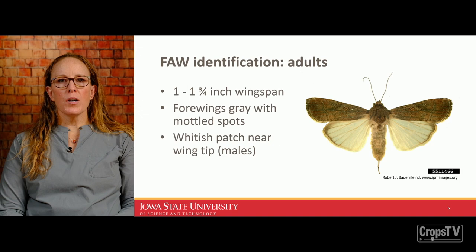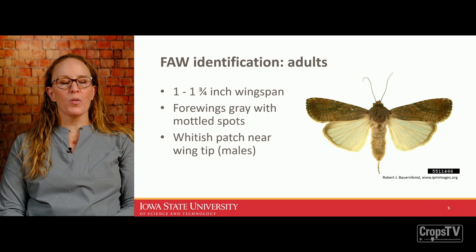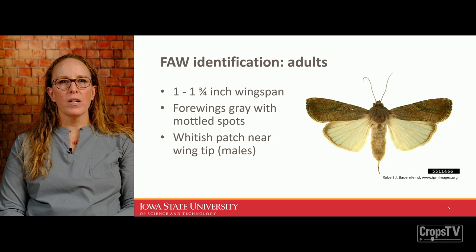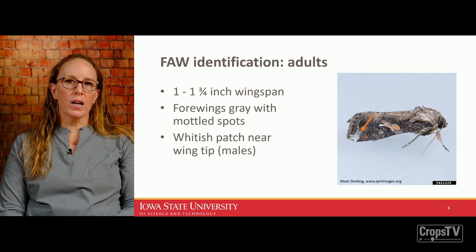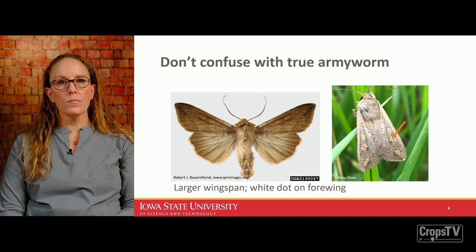Here's a picture of the adult fall armyworm with a relative wingspan of an inch or maybe an inch and three quarters — probably smaller than you think, and smaller than a lot of the other little brown moths we're likely to see in Iowa. The forewings are gray with mottled spots. The hind wings are a creamy, transparent color, and the males have a whitish patch near the wingtip. You can also see how hairy and scale-covered the body is.